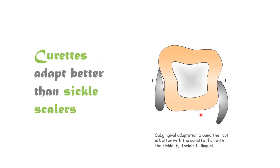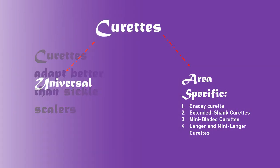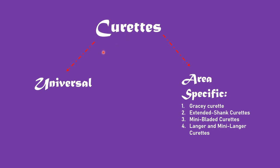Curettes adapt better than sickle scalers, providing good adaptability on the root surface both on the facial and lingual surfaces. Curettes are of two types: universal and area-specific. Under area-specific, there are four major curettes: Gracey, extended shank curette, mini blade curette, and Langer/mini-Langer curette.